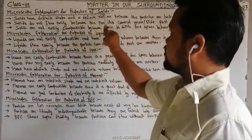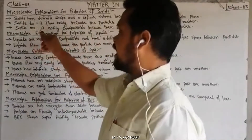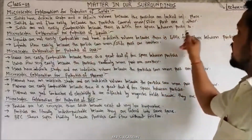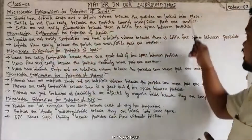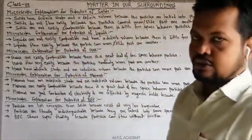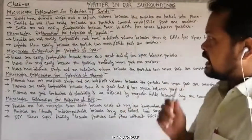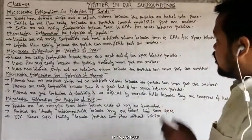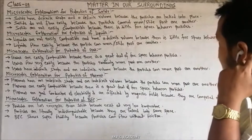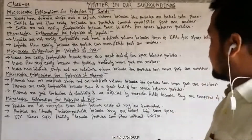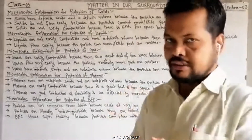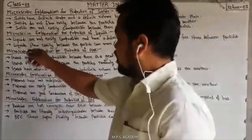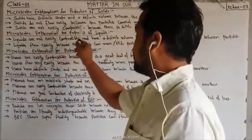Solids have a definite shape and a definite volume because the particles are locked into place. जो solid होते हैं उनके definite shape and definite volume होते हैं क्योंकि जो उनके particles होते हैं वो एक ही जगह पर locked होते हैं, उनके particles में movement नहीं होता है। Secondly, solids do not flow easily because the particles cannot move past one another.